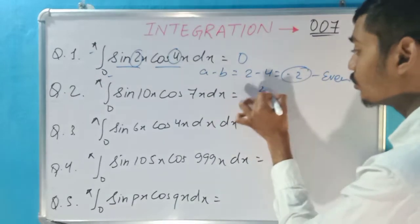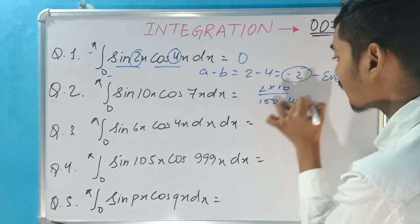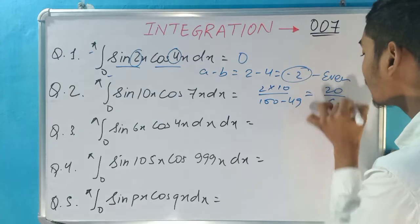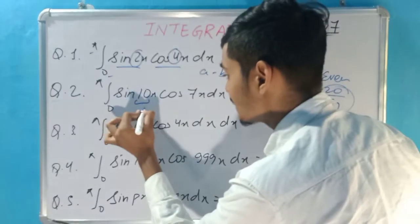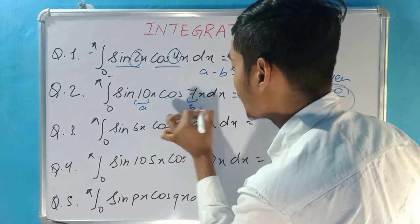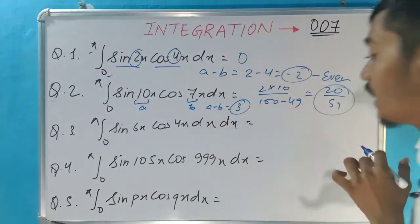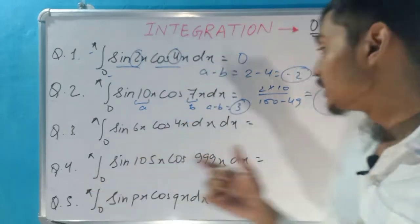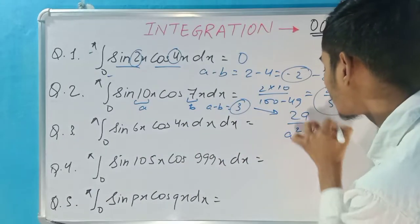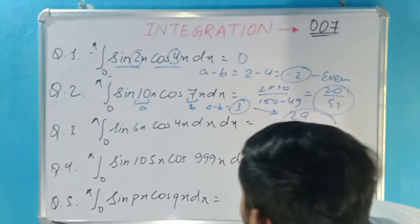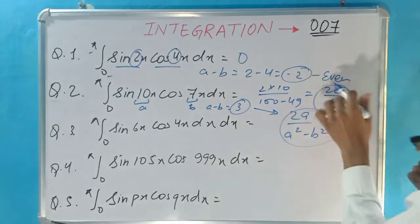Let's solve these questions one by one to see how to use the trick. For the first question, the integral limit is 0 to π — which is the required format for this trick. We have sin(ax)cos(bx) format. We check a minus b: here a minus b equals 2 minus 4, which gives minus 2.